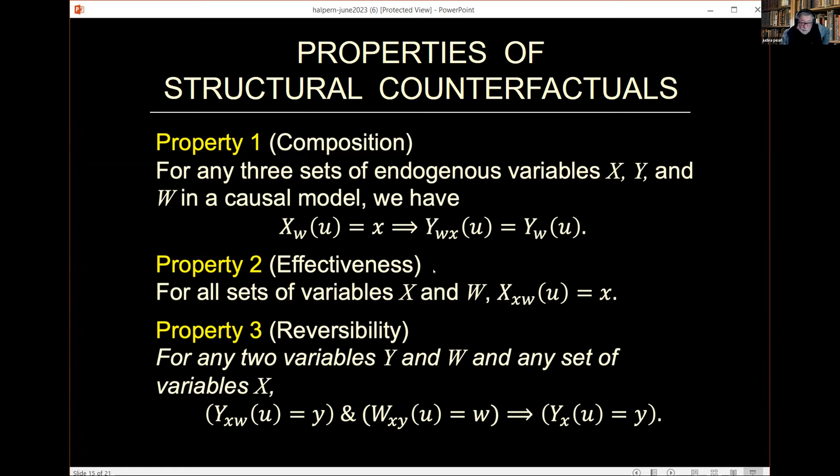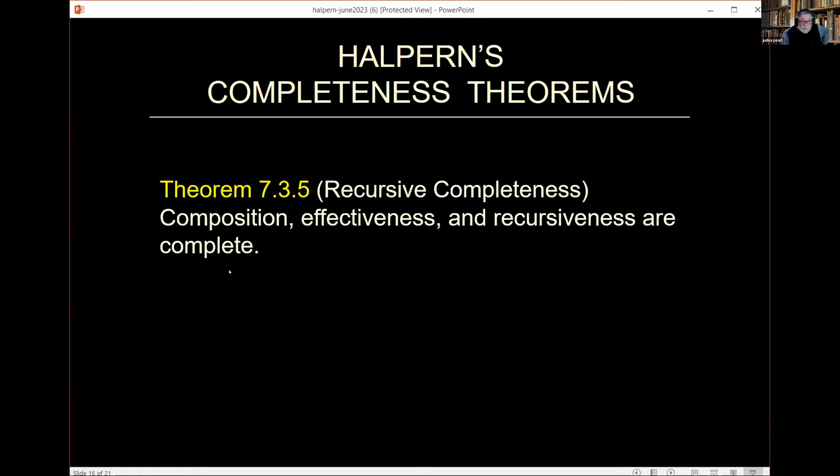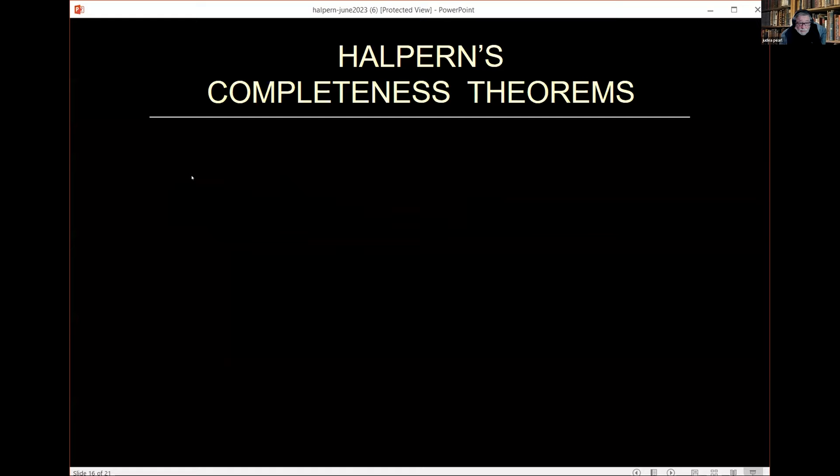Now what can we do with these properties, and why is it important? This is what Joe has instructed us in 1998. Joe proves that when you have a recursive system, namely no feedback, then composition and effectiveness are complete, sound and complete. Since they are properties of every causal model, soundness is automatic, it can be easily proven, but completeness is not easily proven, and Joe proved that they are complete. Namely, you haven't forgotten any.